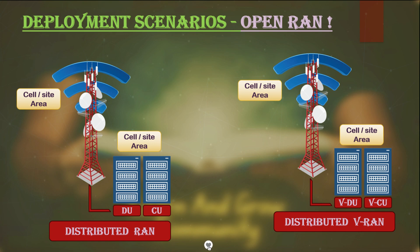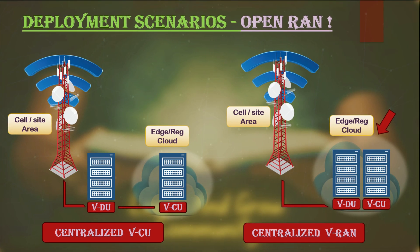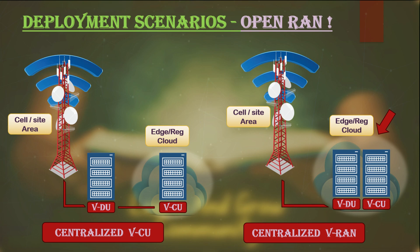Operators can add or manage new features and functions at the cell or site level using software on the same hardware. At the next stage, operators and telcos can move the centralized units away from the cell or site and deploy a cloud-based centralized unit. This cloud-based centralized unit can serve more than one cell or site and allocates resources to respective cells or sites based on requirements. The Distributed Unit remains at the cell or site, so a midhaul interface is needed to connect the cloud centralized unit with the site distribution unit. This midhaul interface connects the Centralized Unit and Distributed Unit through fiber lines, which operators can own or lease.